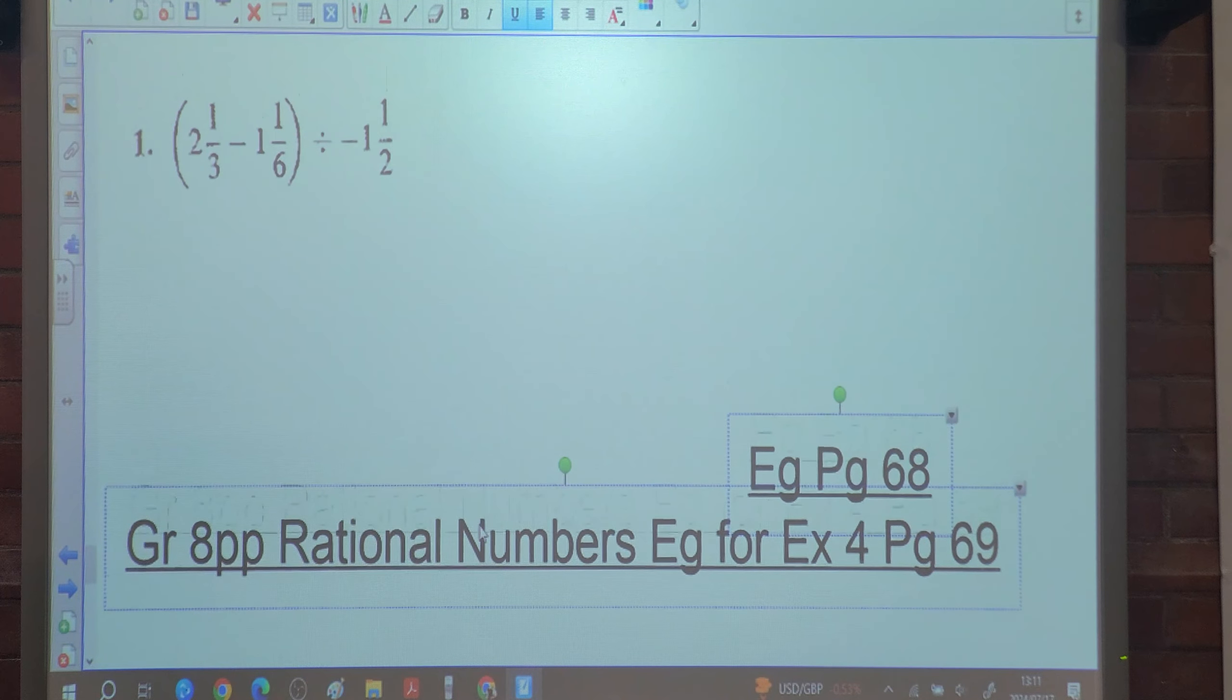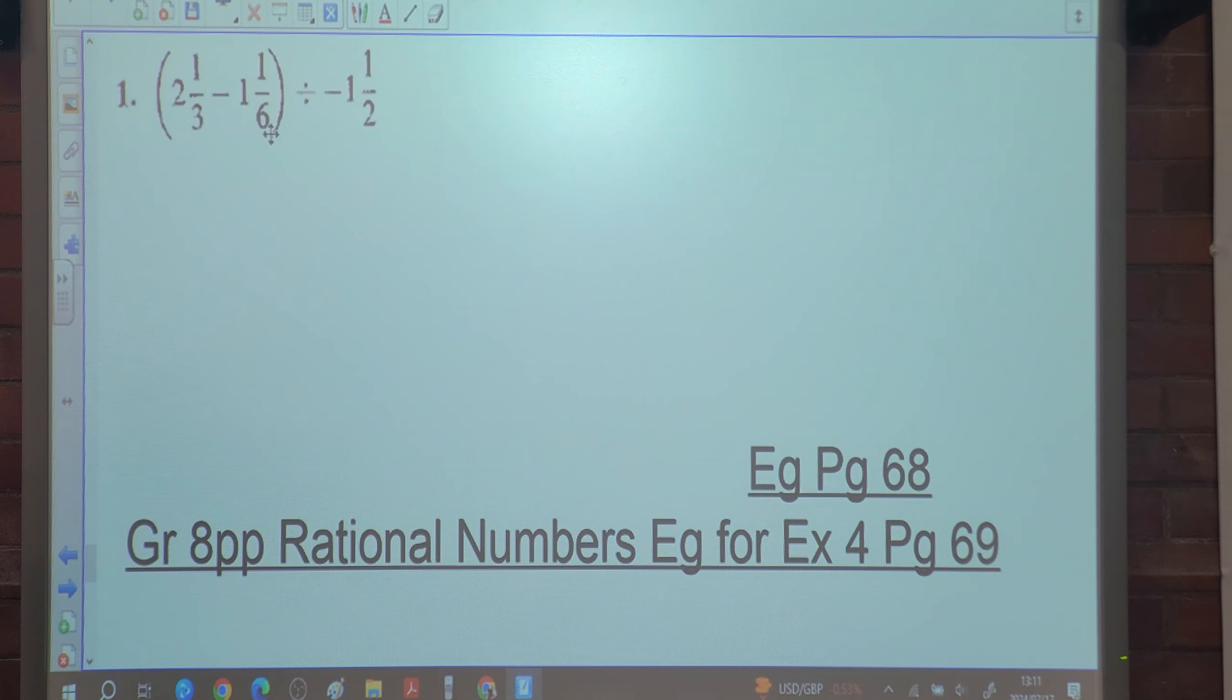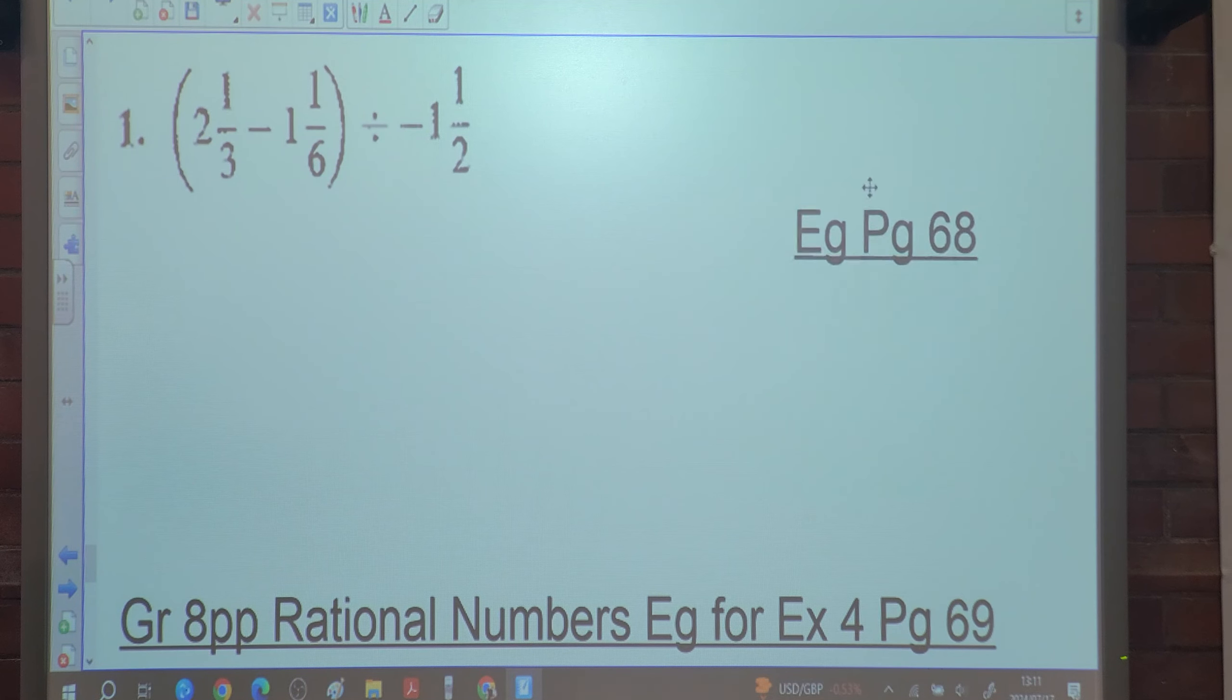This is the first sum. The sum says, the brackets, two thirds minus one sixth. And that must be divided by, the difference of that must be divided by negative one and a half. Where do we start? With brackets.